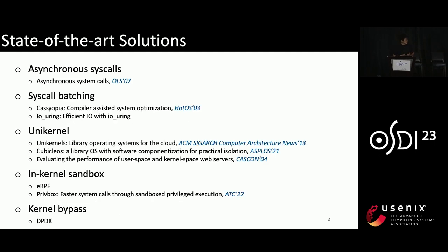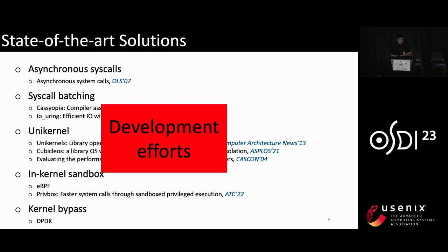A lot of work has tried to reduce syscall cost, like syscall batching using io_uring, in-kernel sandboxing like BPF, and kernel bypass mechanisms like DPDK. But all these approaches require noticeable development efforts. In other words, developers need to refactor software to benefit from them, and they do not help legacy or current applications.